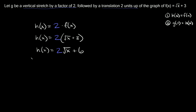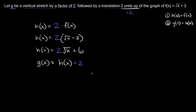Now we need to perform our second transformation to find g of x. We're going to say that g of x is equal to h of x transformed, applying this second transformation to h of x. This one says translate it two units up. If you want to translate a function up or down, you simply add or subtract that number at the very end. Since it says two units up, we put plus two at the very end.